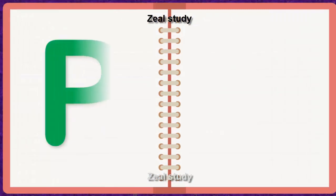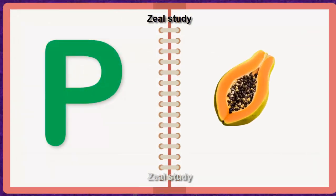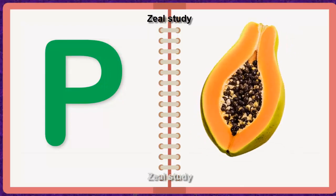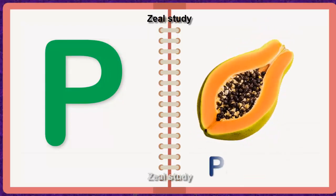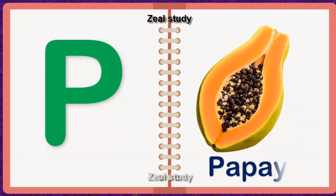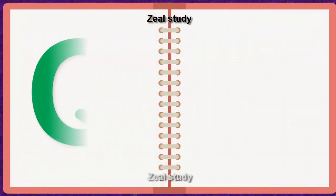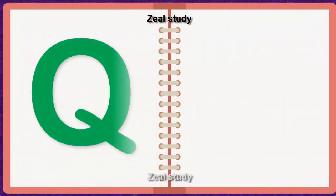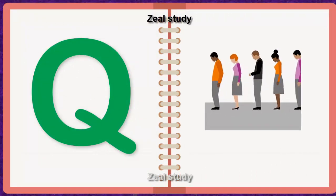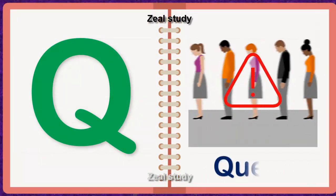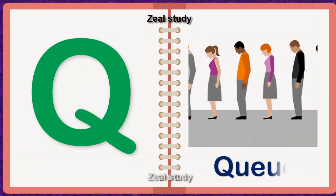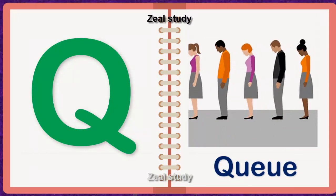P for Papaya. P, A, P, A, Y, A. Papaya. Q for Queue. Q, U, E, U, E. Queue.